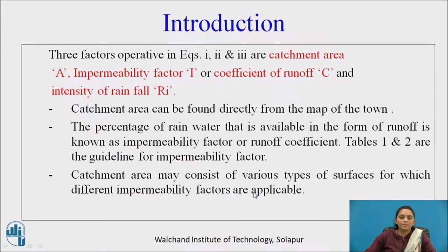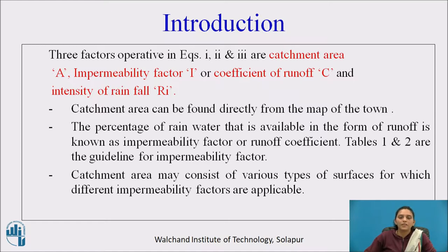In the previous formulas, there are three operative factors: catchment area, impermeability factor (also called coefficient of runoff), and intensity of rainfall. Catchment area can be found directly from the map of the town.